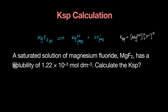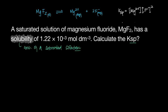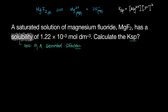When you hear the word solubility, understand that solubility means the concentration of a saturated solution — meaning how much of the solid dissolved in one dm³. Using that information, we've got to find the KSP.